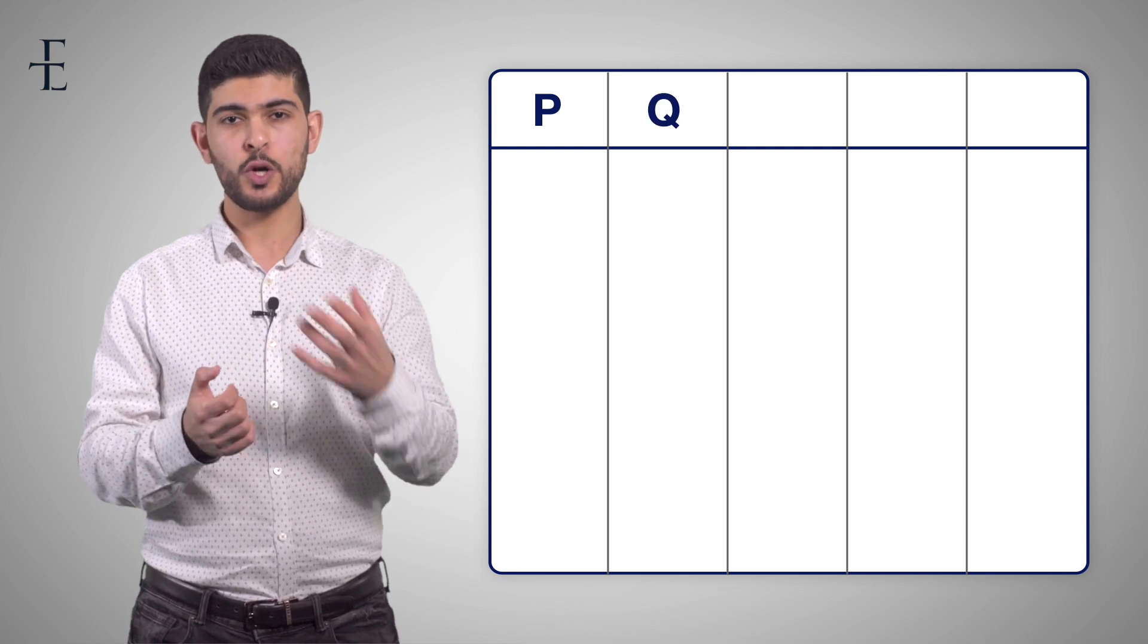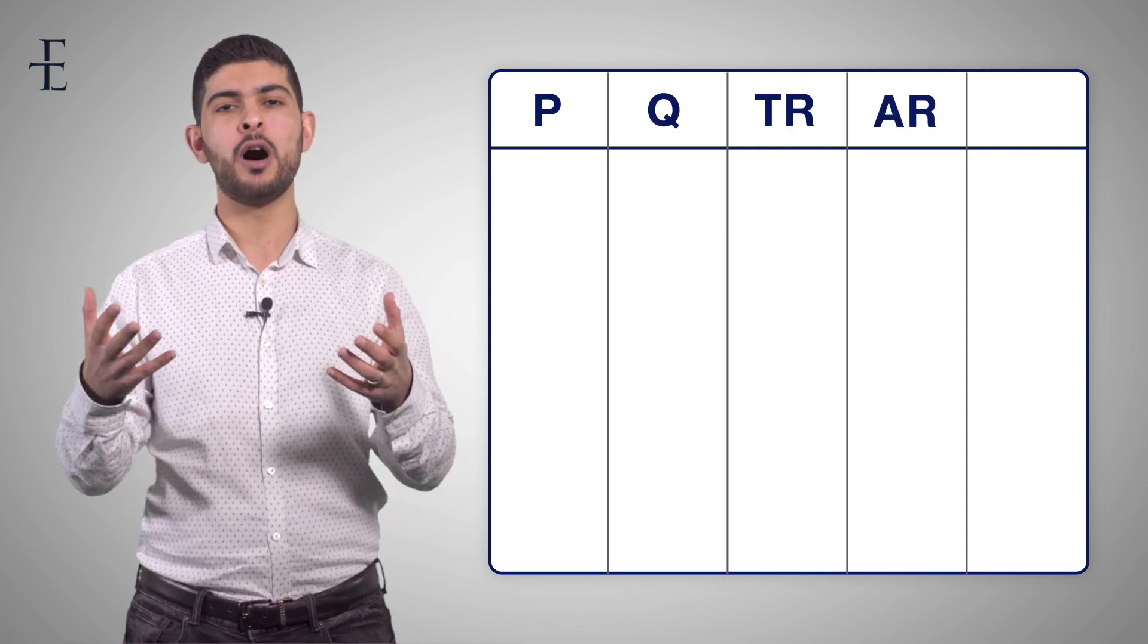Okay, so now that we've understood the five characteristics of perfect competition, let's do a really basic, simple example. So let's construct a table. On the table, we're going to have price, quantity, total revenue, average revenue, and marginal revenue.